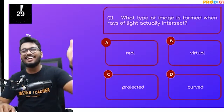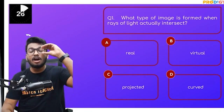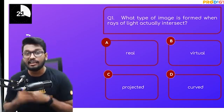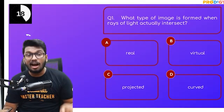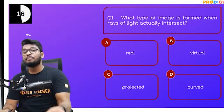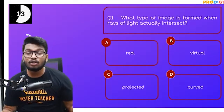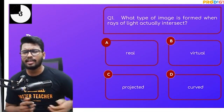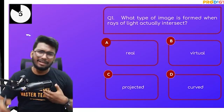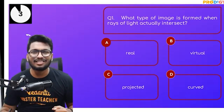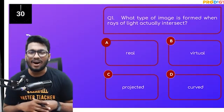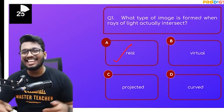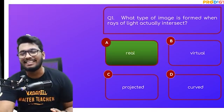Here's your first question — 30 seconds: What type of image is formed when rays of light actually intersect after refraction? Is it a real image, a virtual image, a projected image, or a curved image? The answer: it's a real image, because the rays of light are actually intersecting after refraction.